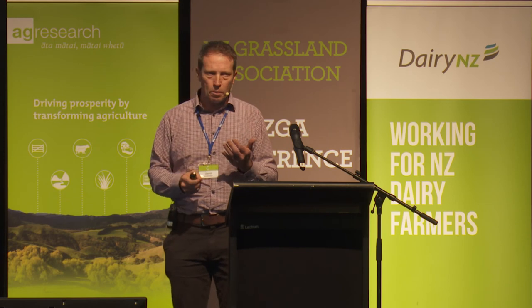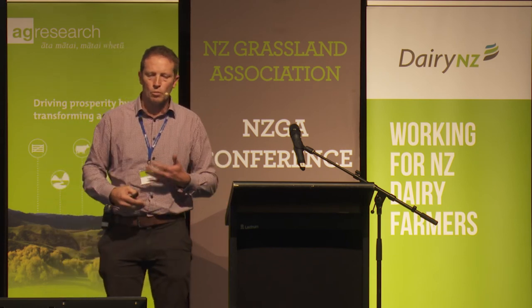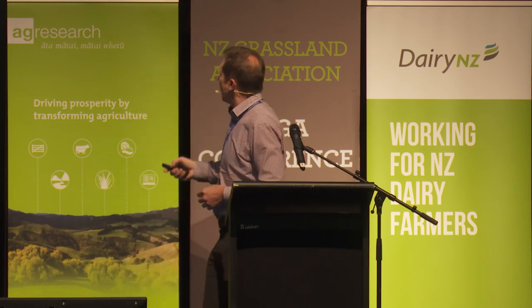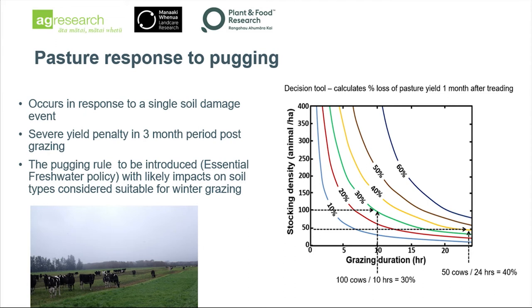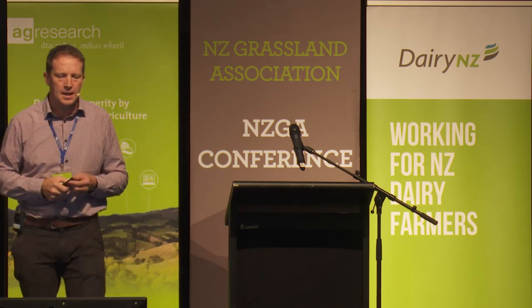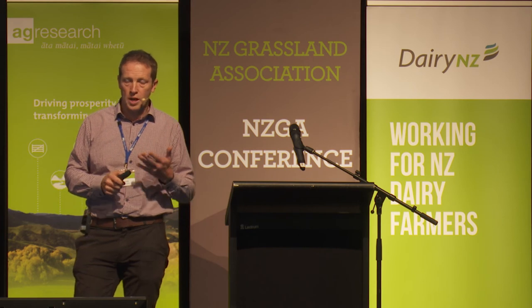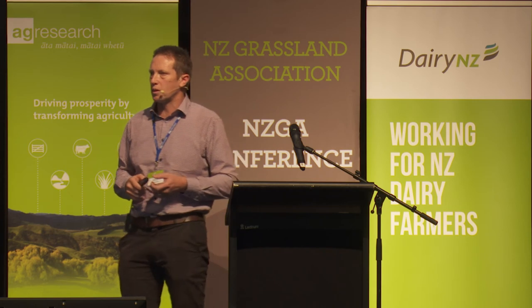Moving on to pasture response to pugging. This is the opposite to compaction — it responds to a single damage event. You put your animals onto a very wet soil, and the more you have and the longer they're on there, the worse it is, and you'll pay a big yield penalty. The AgriSearch Tread Ready Reckoner tool gives a good indication of how grazing duration and stocking density create a relationship for the yield penalty you'll suffer in the immediate month following the pugging event — you can see greater than 50% reduction in pasture yield. The other emerging issue is the essential freshwater policies coming through, with a new pugging rule proposed that will likely have impacts on where winter grazing paddocks are placed in the future.